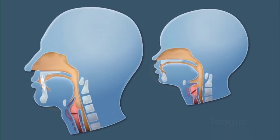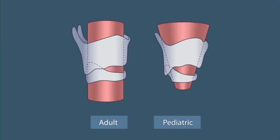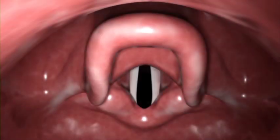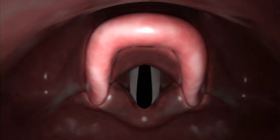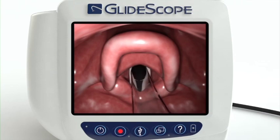The tongue is large relative to the size of the mouth, which can make insertion of the blade more challenging. Similarly, vocal cords slant anteriorly and rostrally. The adult larynx is cylinder-shaped while the infant larynx is funnel-shaped. The epiglottis is long and stiff and omega-shaped. These structures can make insertion of the endotracheal tube more challenging, but using the video laryngoscope helps overcome these challenges by better visualizing the airway.